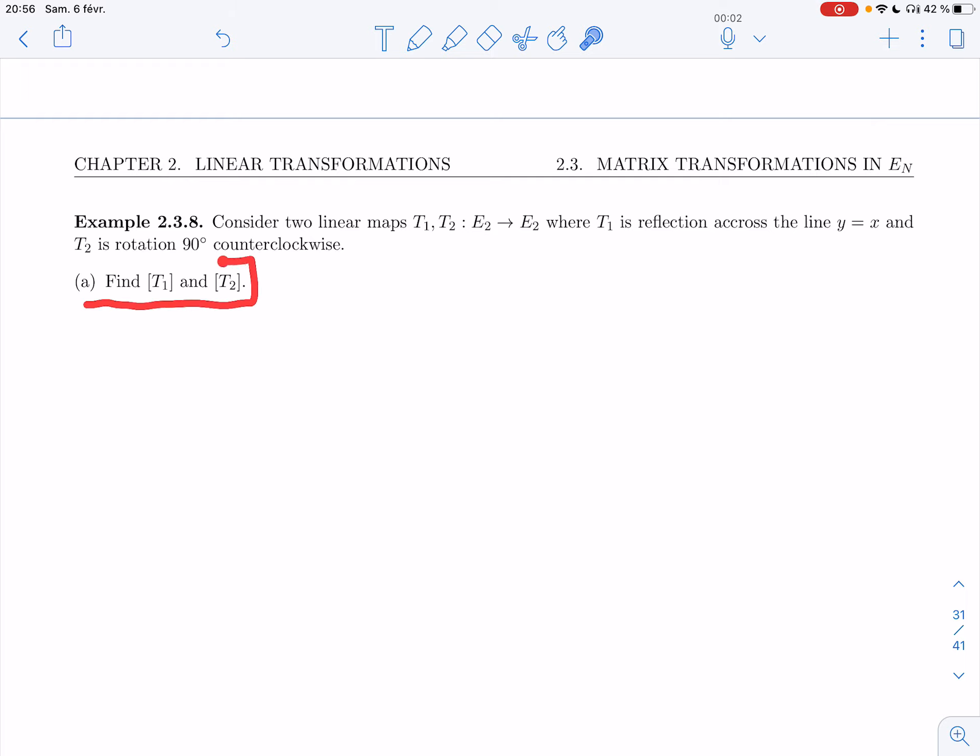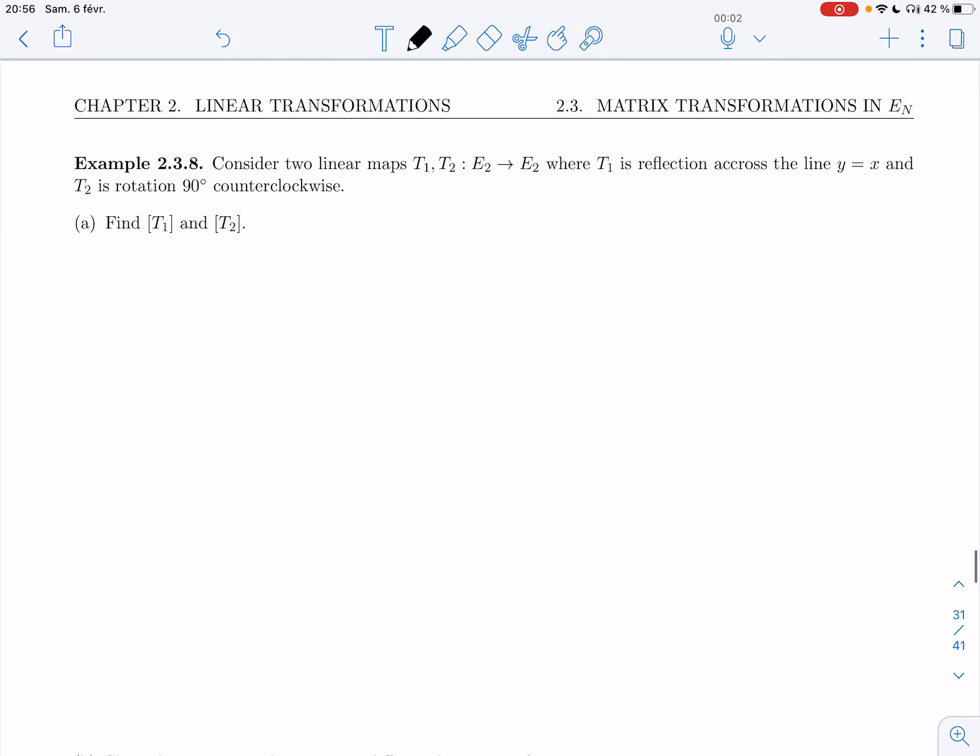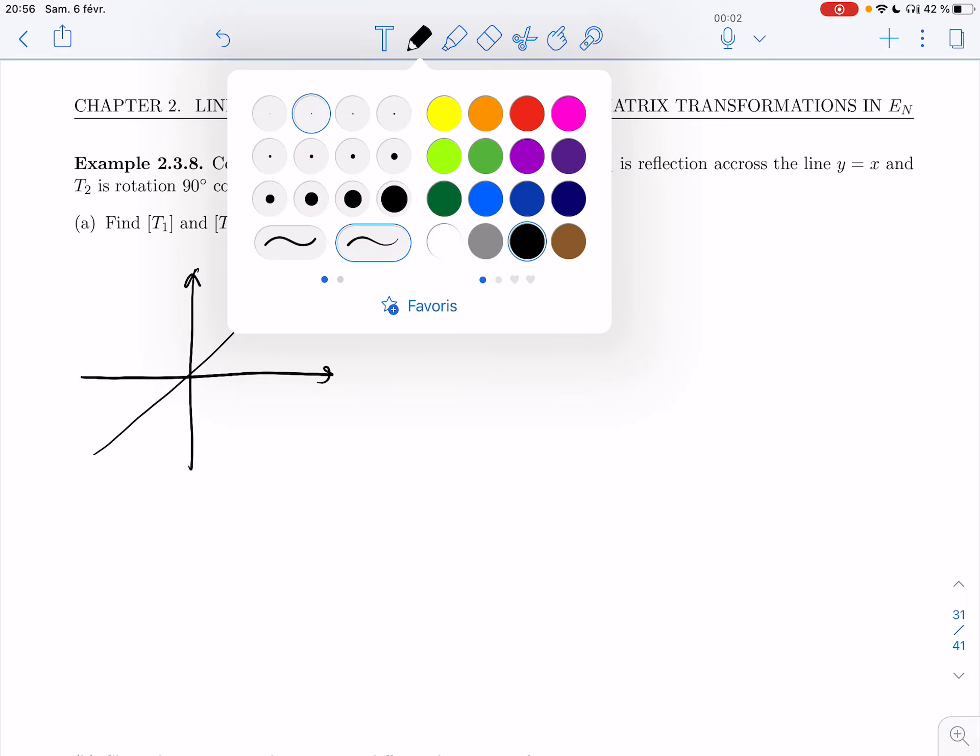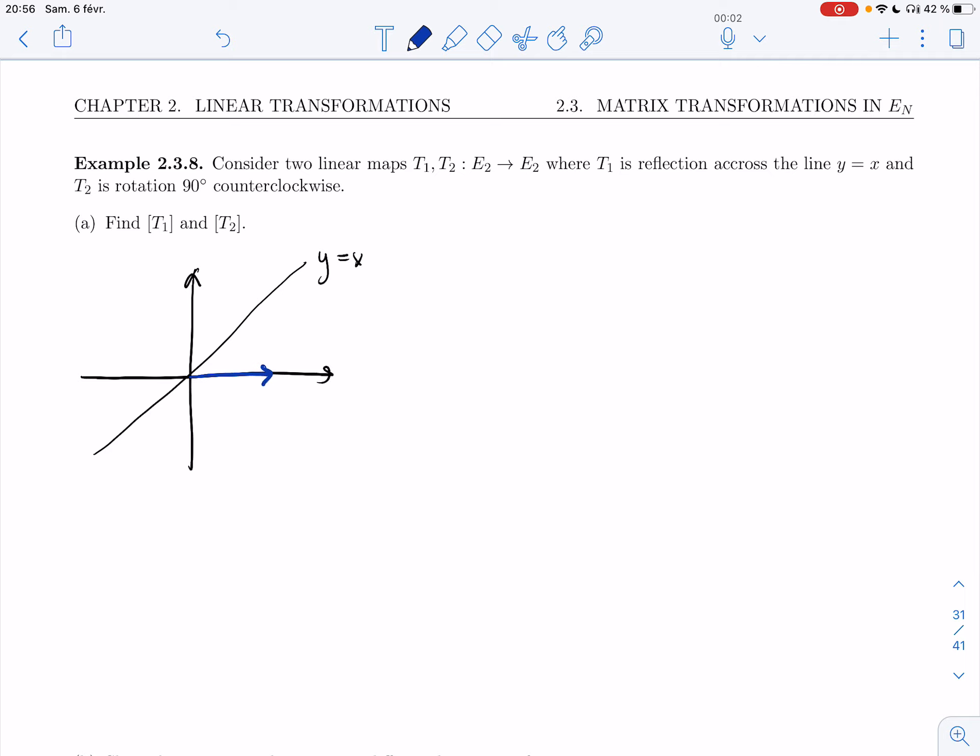In part A, I'm going to find the matrices of T1 and T2. We said T1 was reflection across y equals x. So if I take (1,0), our reflection is just going to flip and become (0,1). And the opposite is true as well. These just switch.